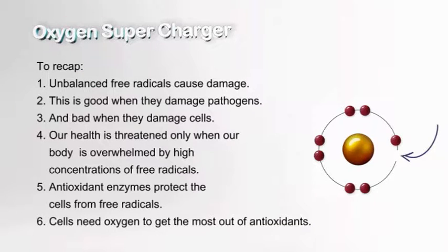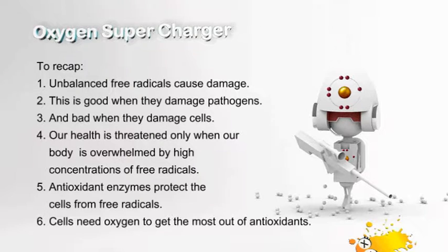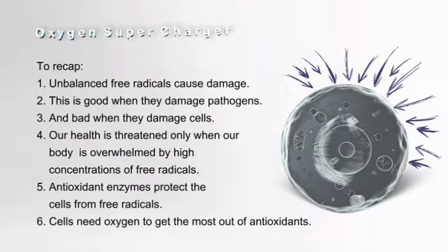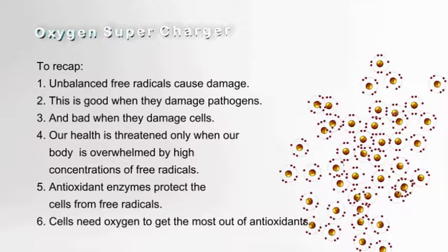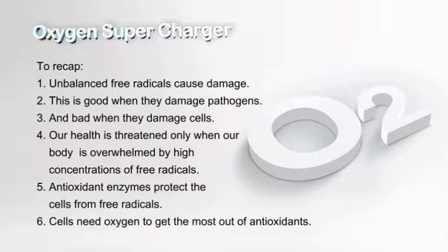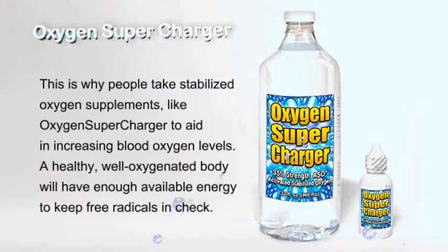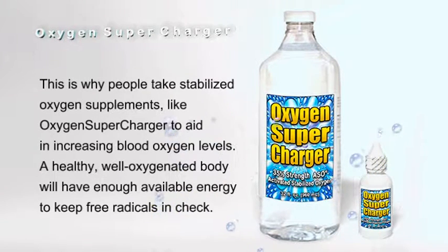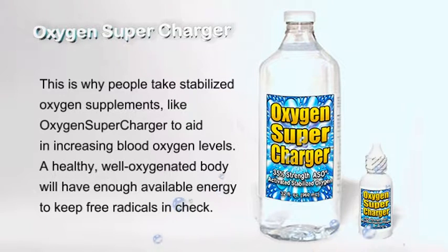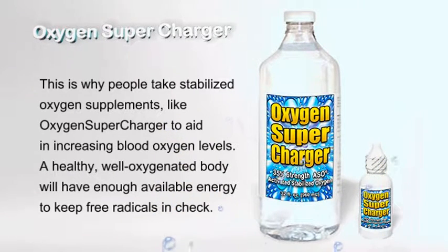So, to recap: unbalanced free radicals cause damage — this is good when they damage pathogens, and bad when they damage cells. Our health is threatened only when our body is overwhelmed by high concentrations of free radicals. Antioxidant enzymes protect the cells from free radicals, and cells need oxygen to get the most out of antioxidants. This is why people take stabilized oxygen supplements, like Oxygen Supercharger, to aid in increasing oxygen blood levels. A healthy, well-oxygenated body will have enough available energy to keep free radicals in check.